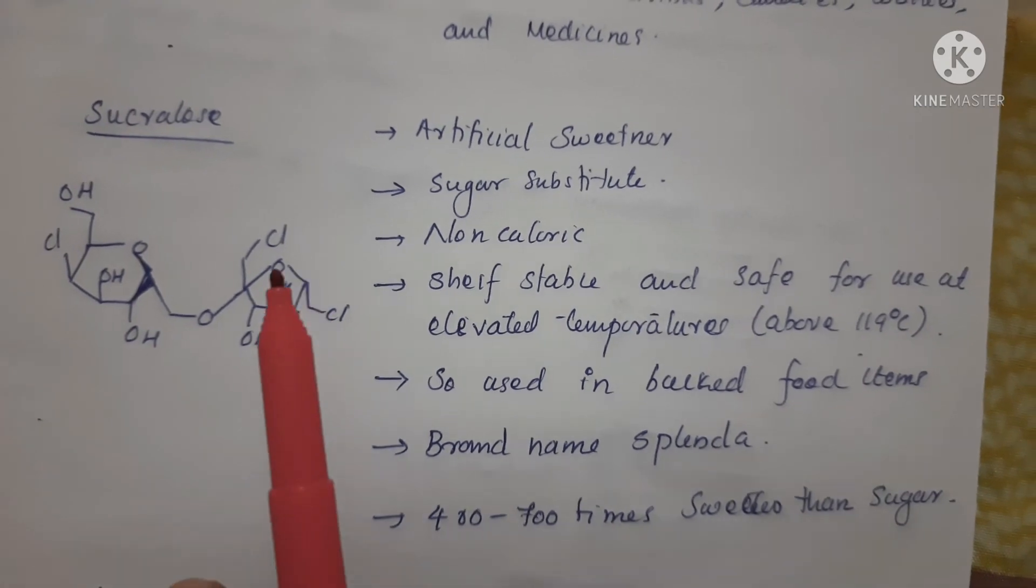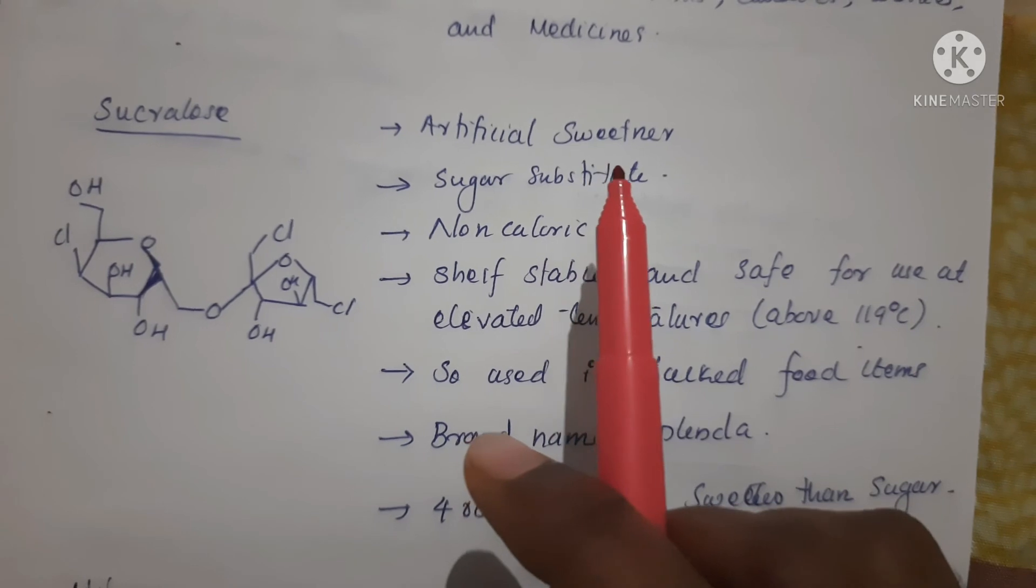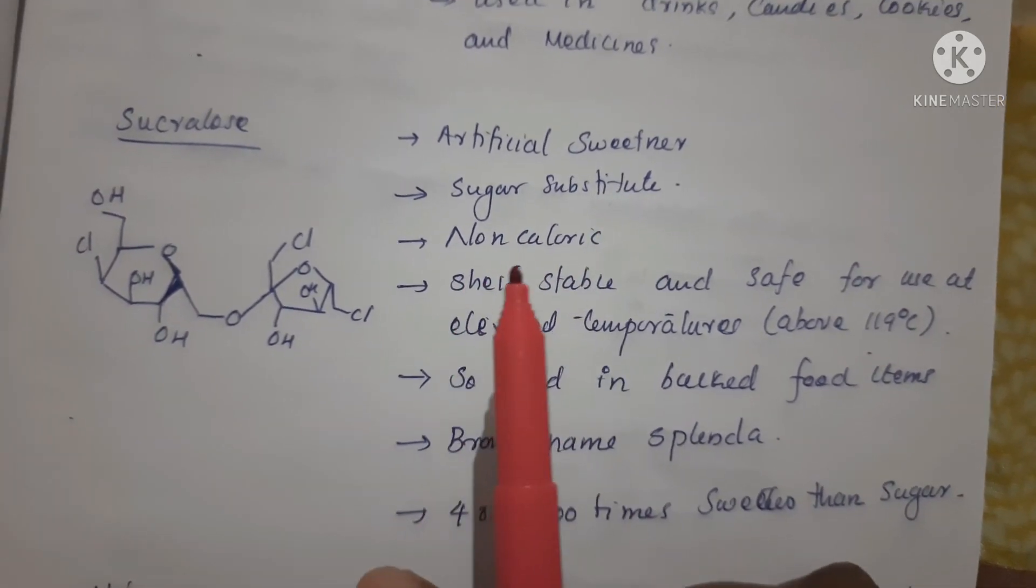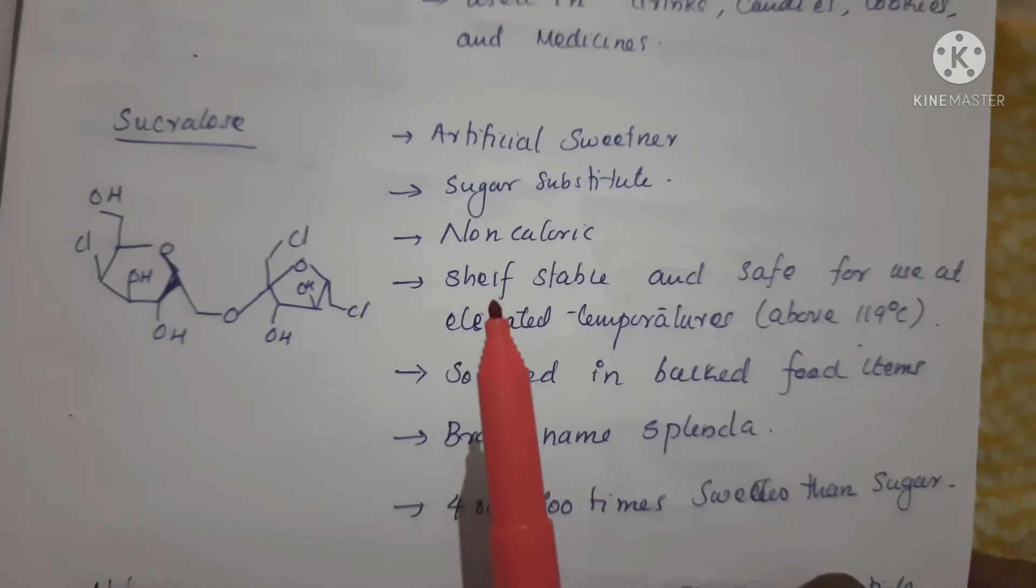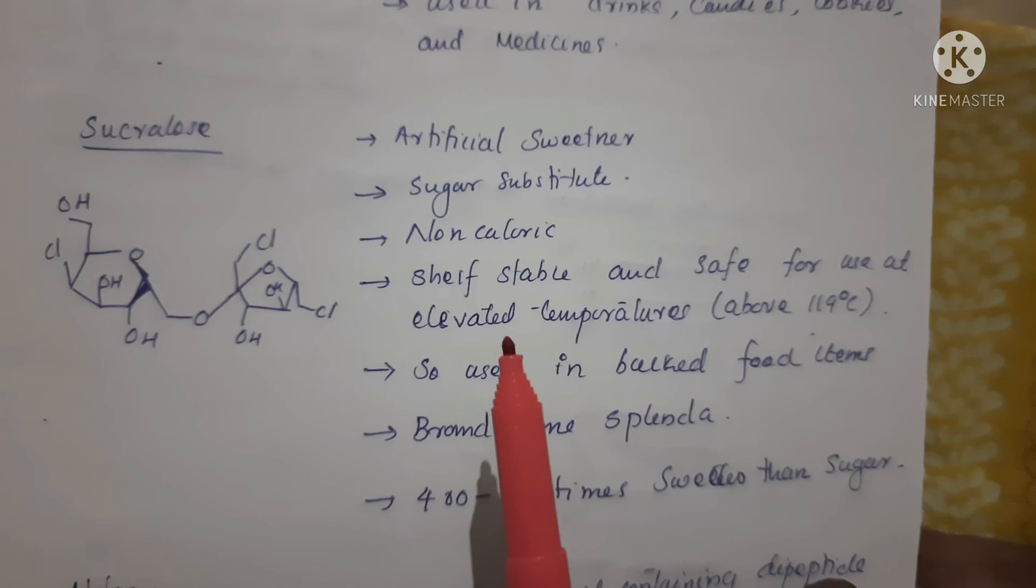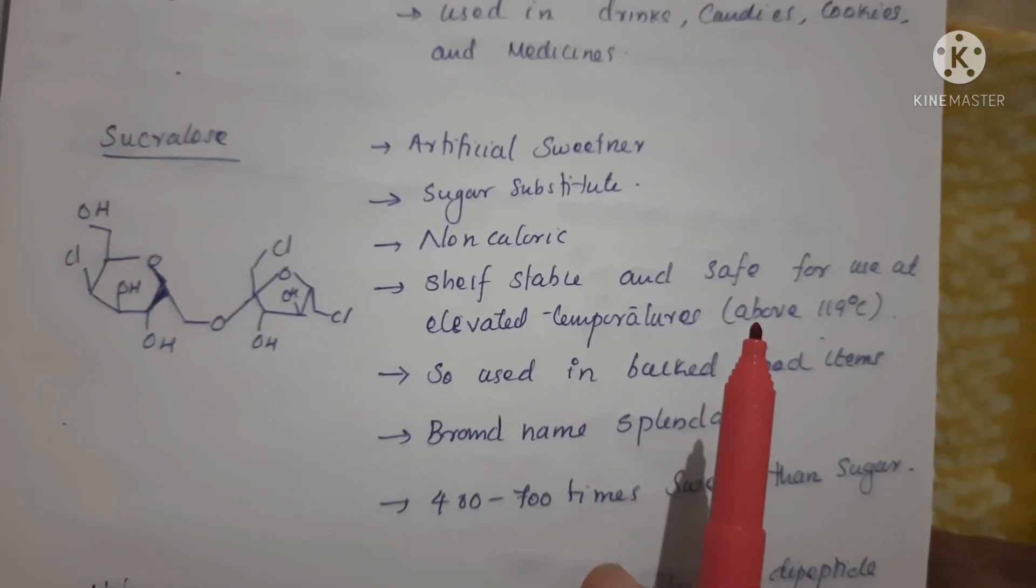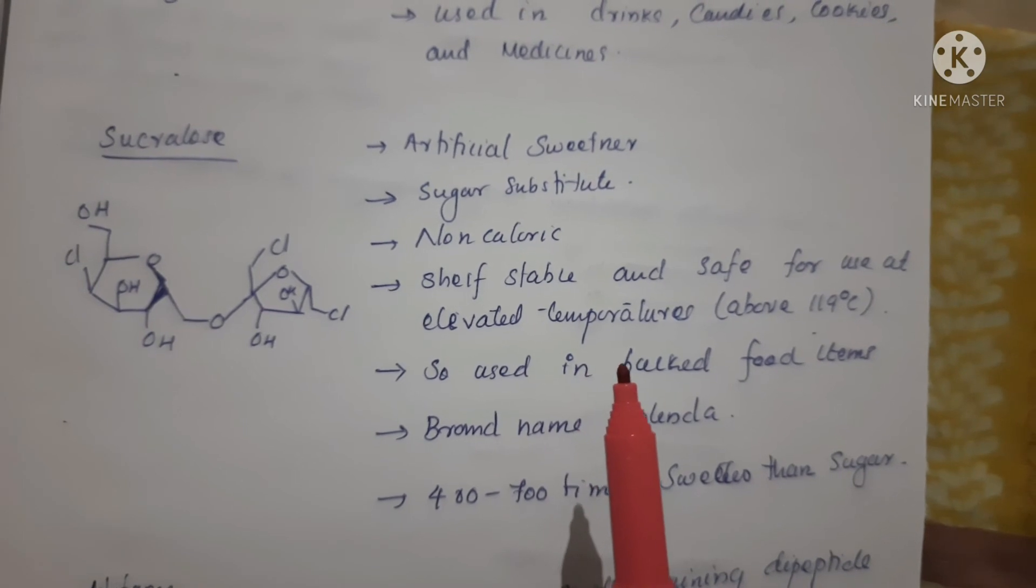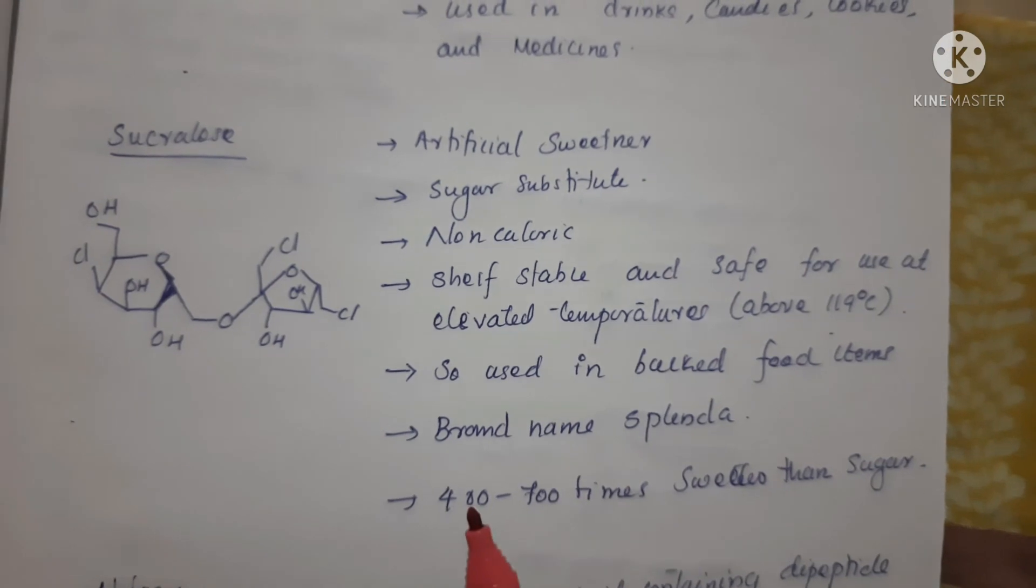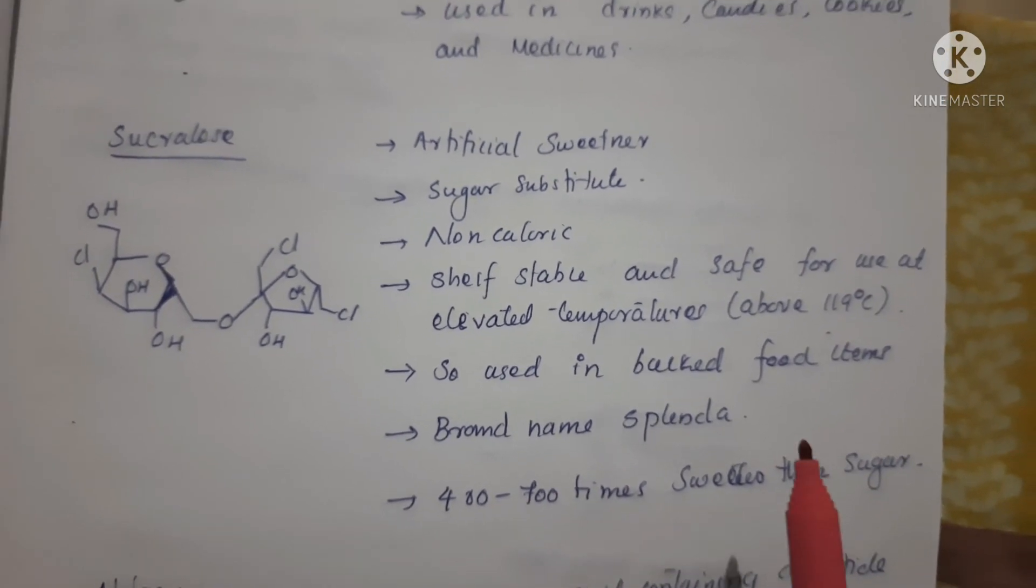Sucralose - here is the structure of sucralose. It's a high-potency sweetener, a sugar substitute, non-caloric, shelf stable, and safe for use at elevated temperature above 119 degrees Celsius, so used in baked food items. Brand name is Splenda. It's 400 to 700 times sweeter than sugar.